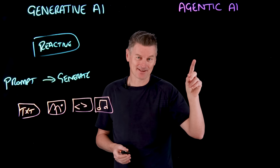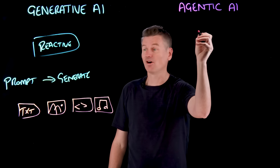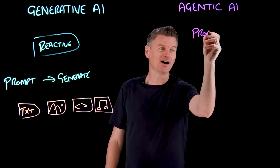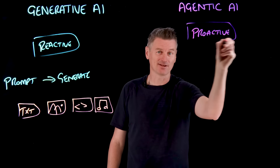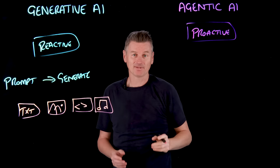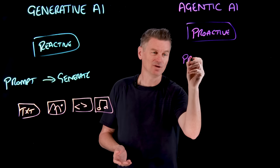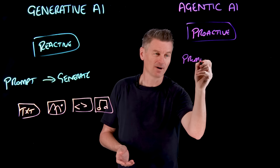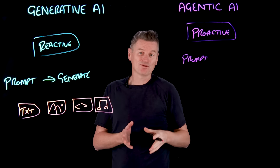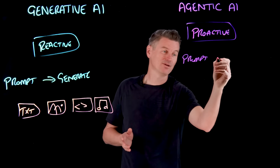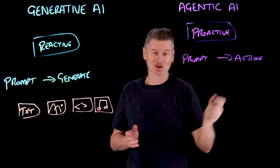Agentic AI systems, by contrast, are not reactive — they are proactive systems. Like generative AI, they often start with a user prompt, but that prompt is then used to pursue goals through a series of actions.